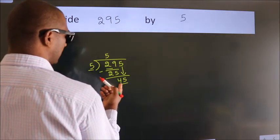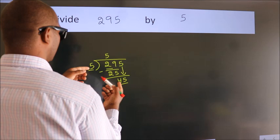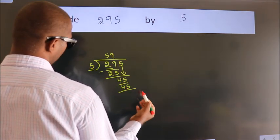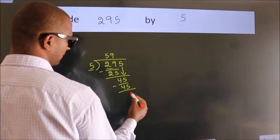When do we get 45? In the 5 table. 5 times 9 equals 45. Now we subtract. We get 0.